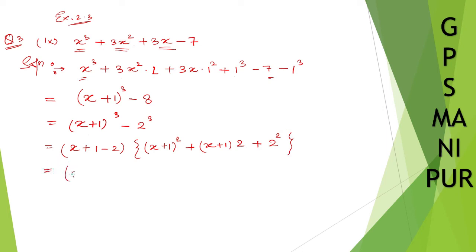Now x plus 1 minus 2, it will be minus 1, x minus 1, x plus 1 whole square, it will be x squared plus twice ab, that is twice x.